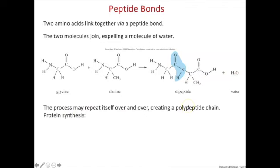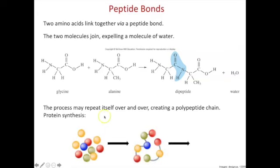This process then continues. Just like addition polymerization for plastics, you keep adding one new amino acid onto one side. The next amino acid would add on here until all these amino acids form a polymer.